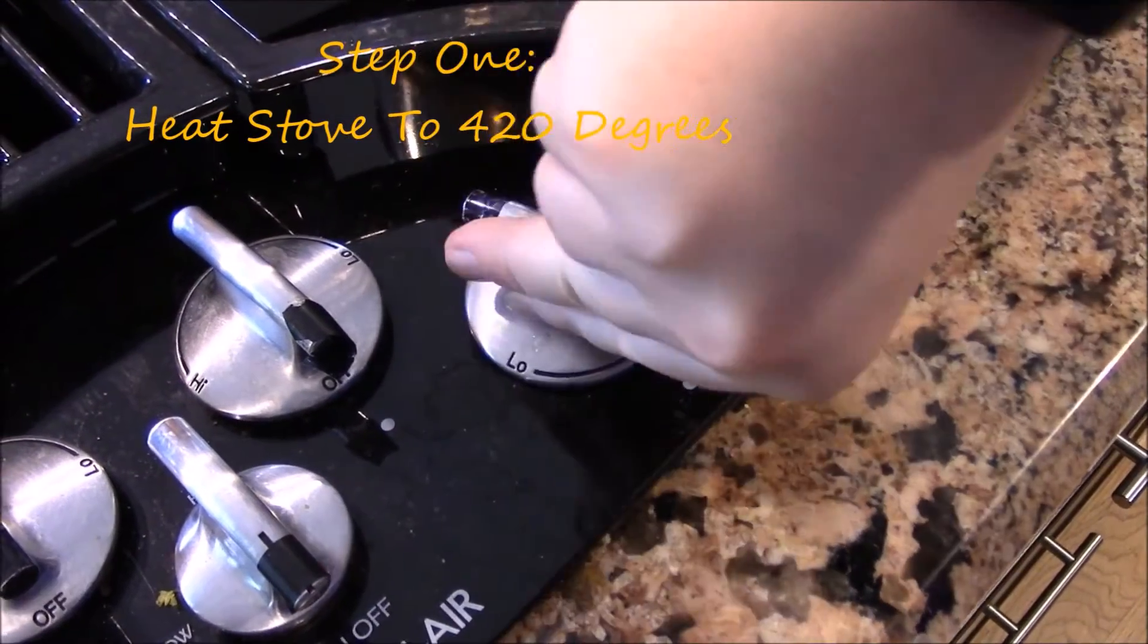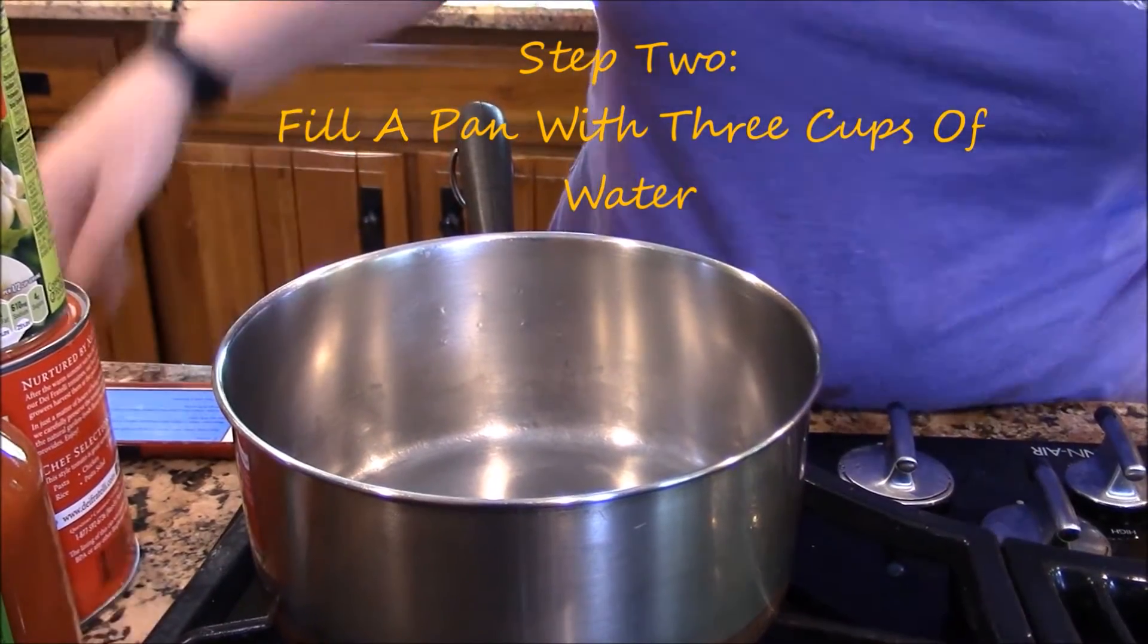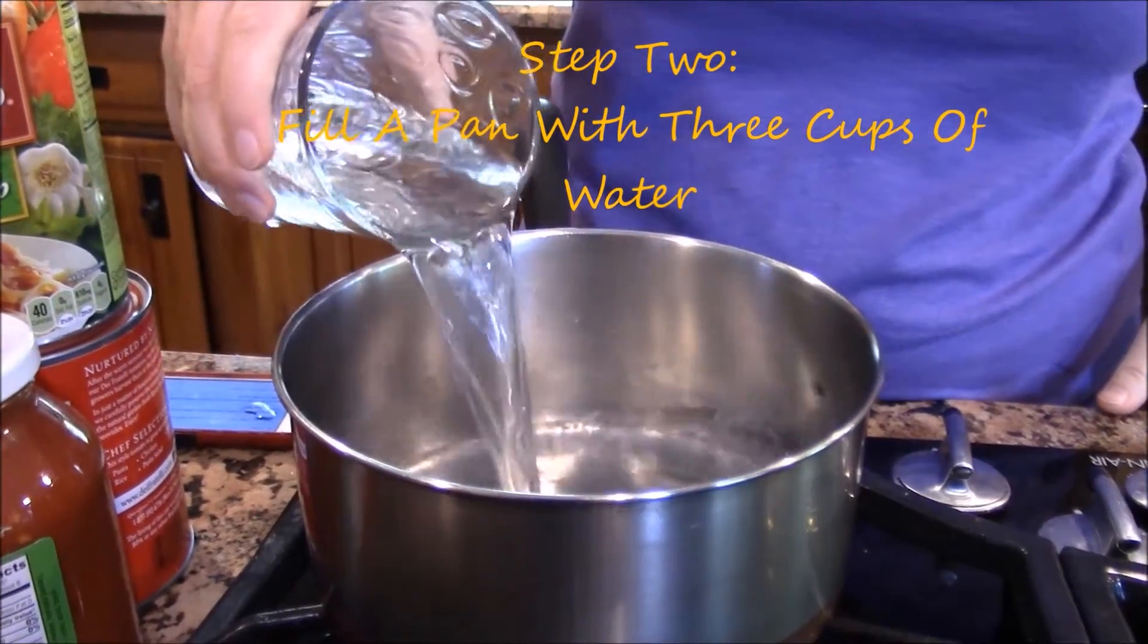Heat your stove to roughly 420 degrees Fahrenheit. Take a large pan and pour about three cups of water into it. Now let that boil.